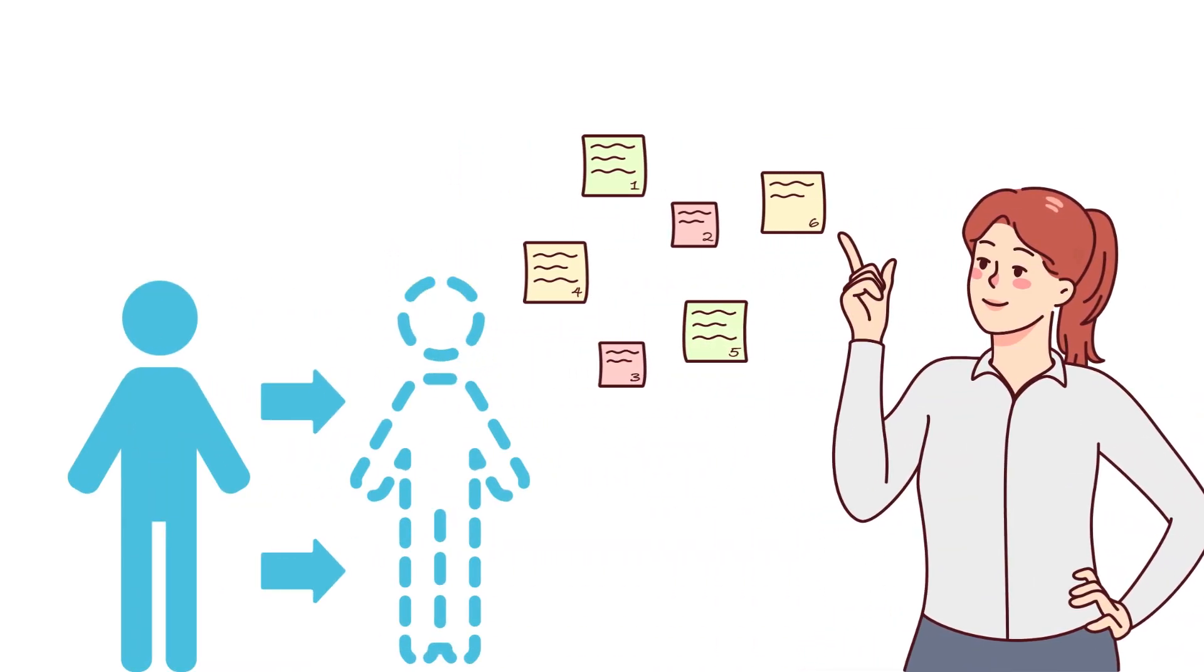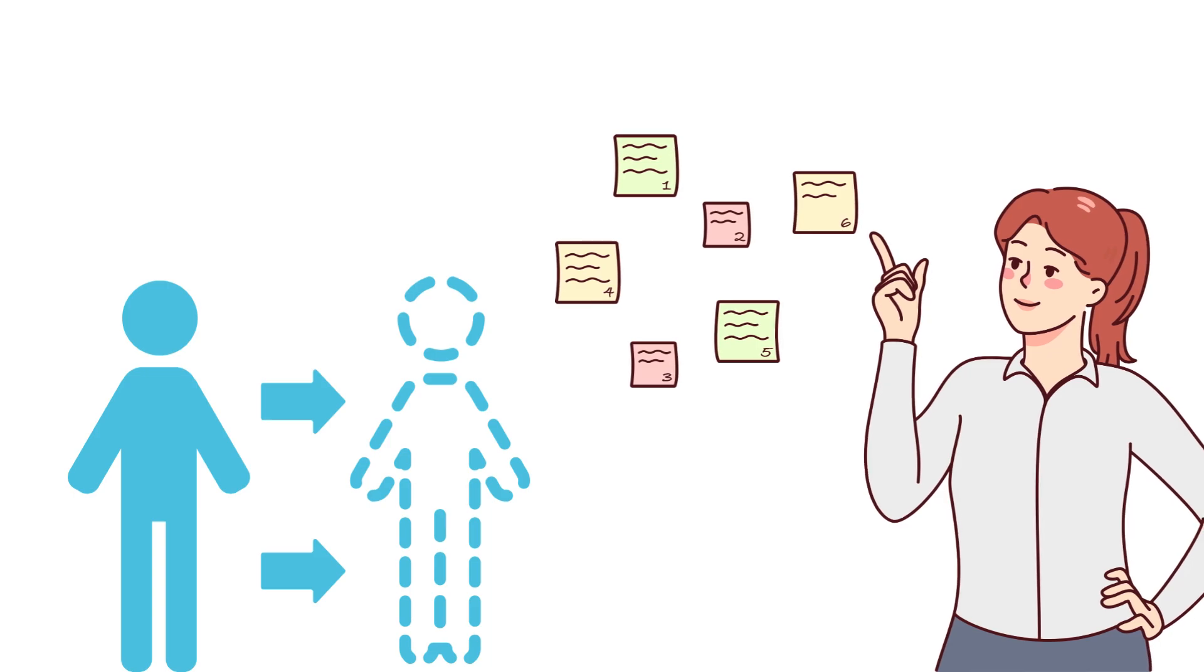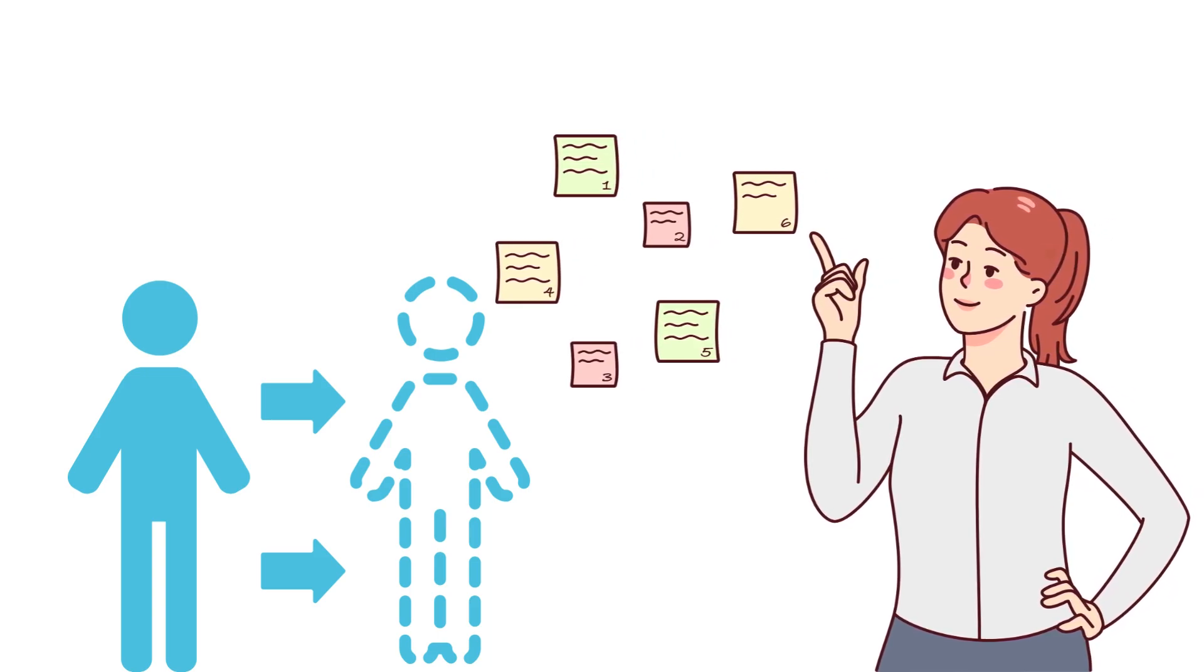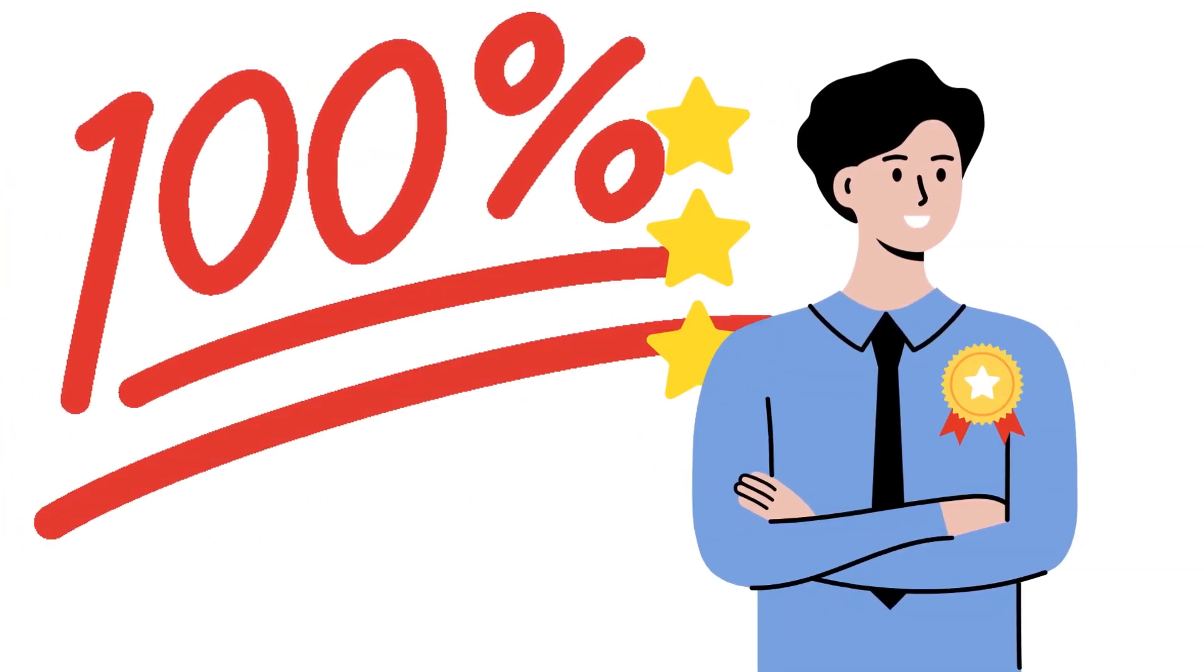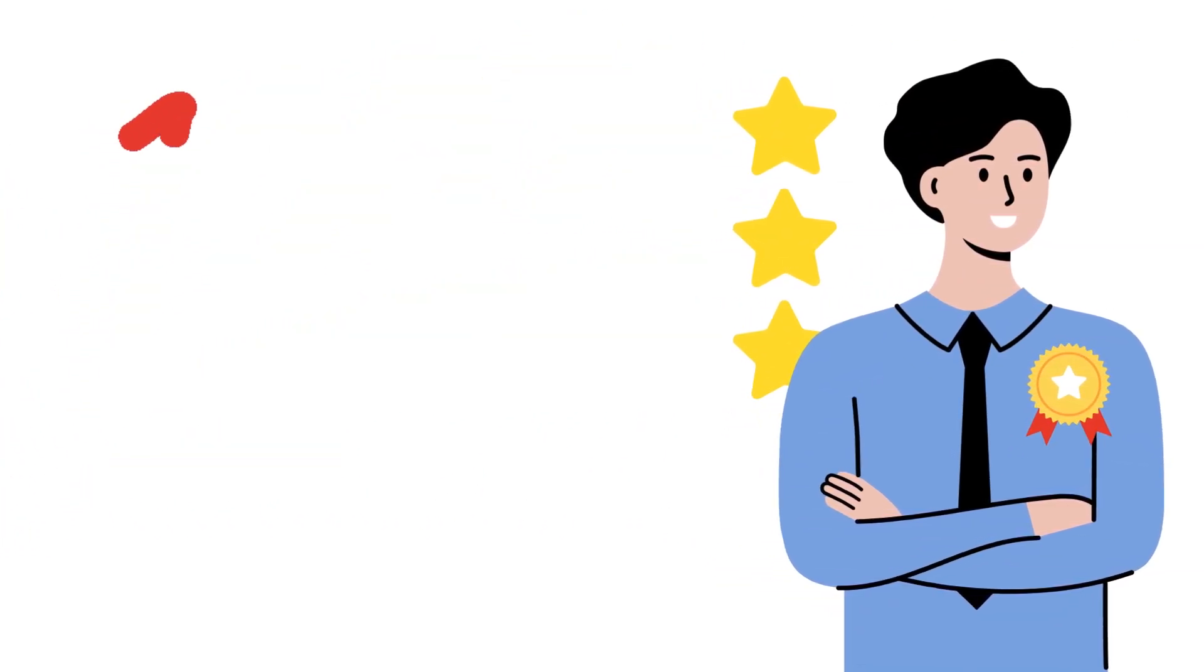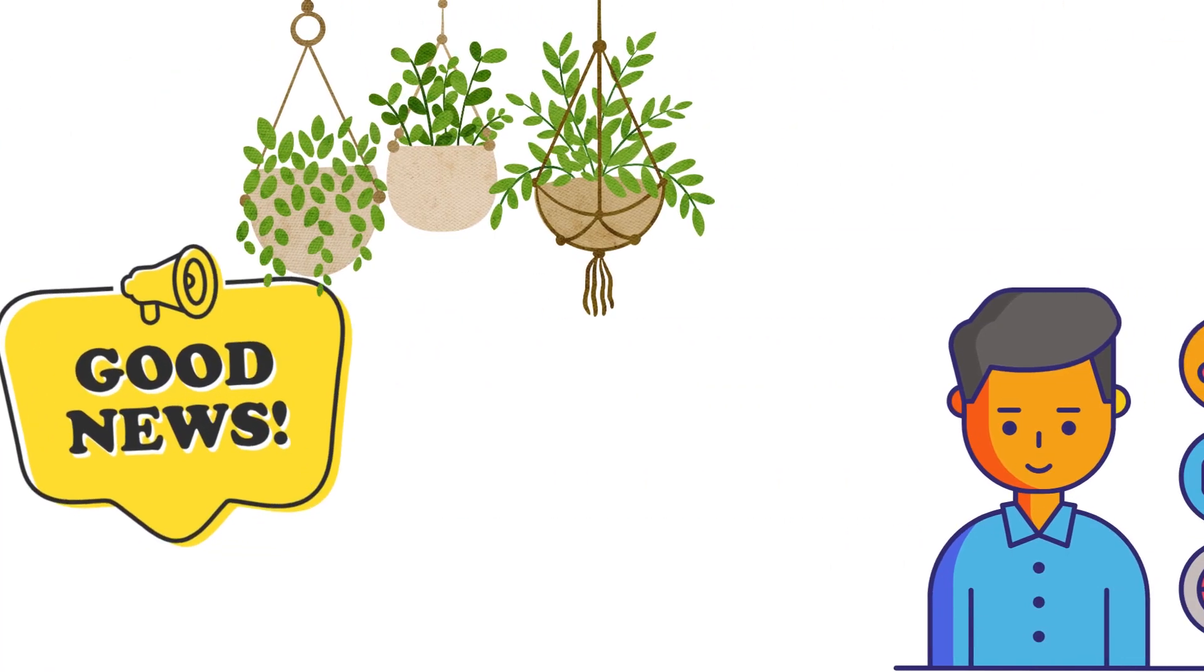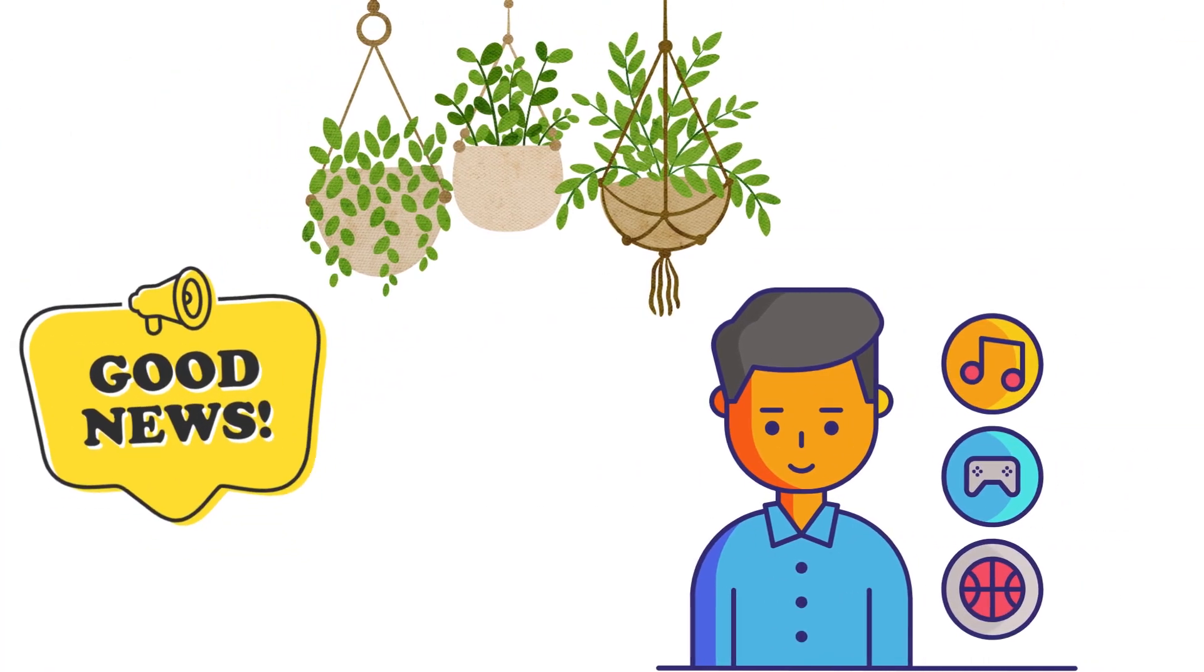Step 2. Prioritize and rotate. Now, I hate to break it to you, but unless you've discovered the secret to cloning yourself or bending the space-time continuum, you can't give 100% to everything all the time. But here's the good news. You don't have to.